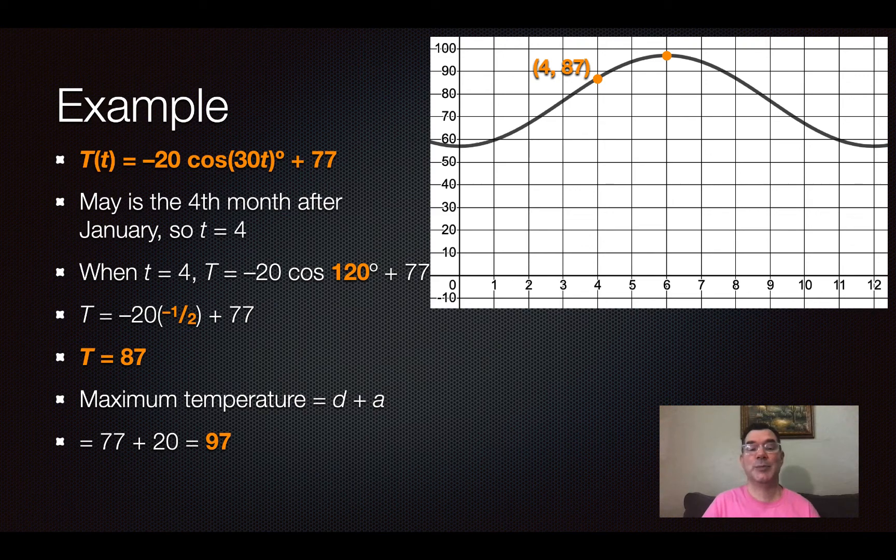Remember, 77 is my d. So it's what's added at the end of the function and 20 is going to be my amplitude. I kind of take the absolute value of that because I know that my maximum is going to be higher than 77, not lower than 77.